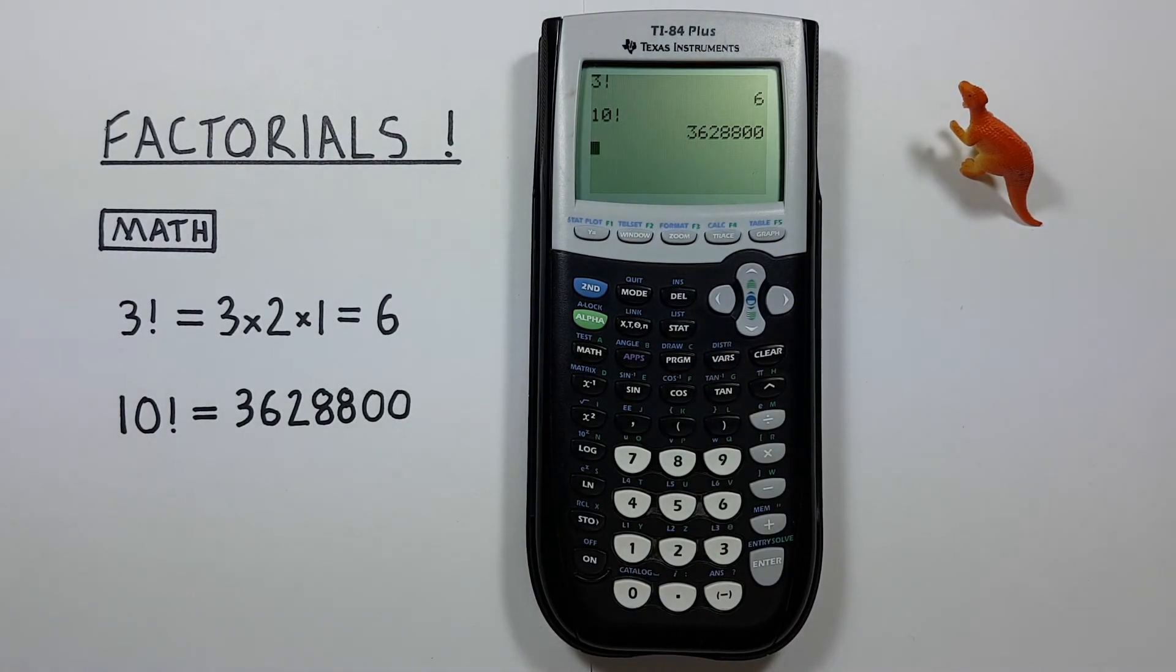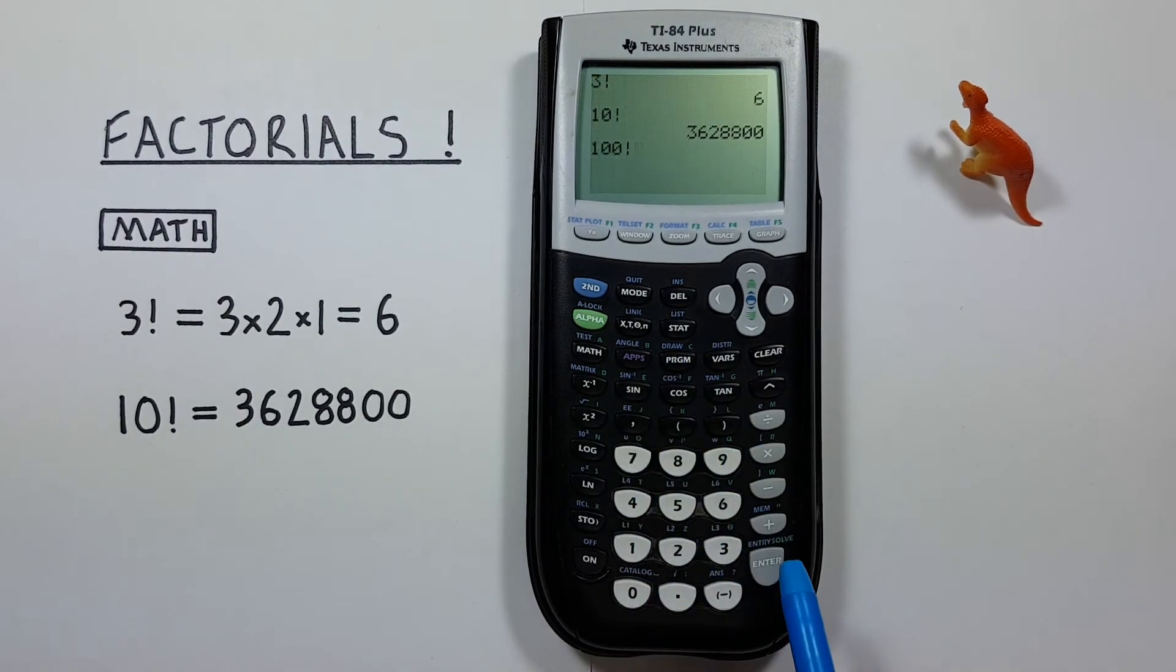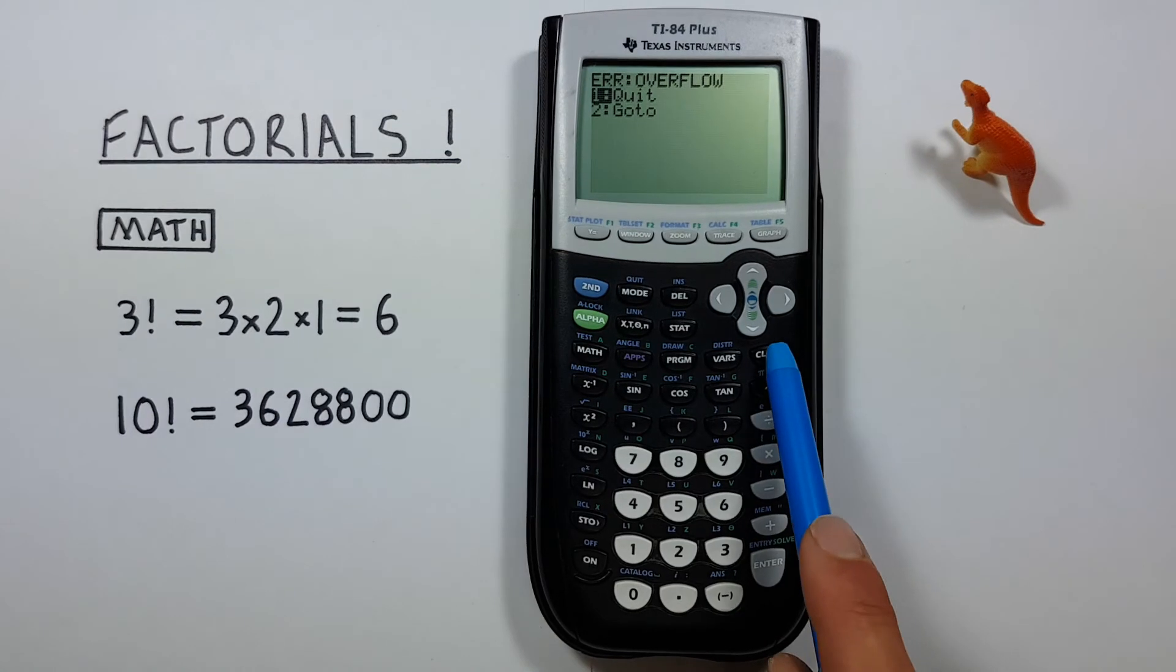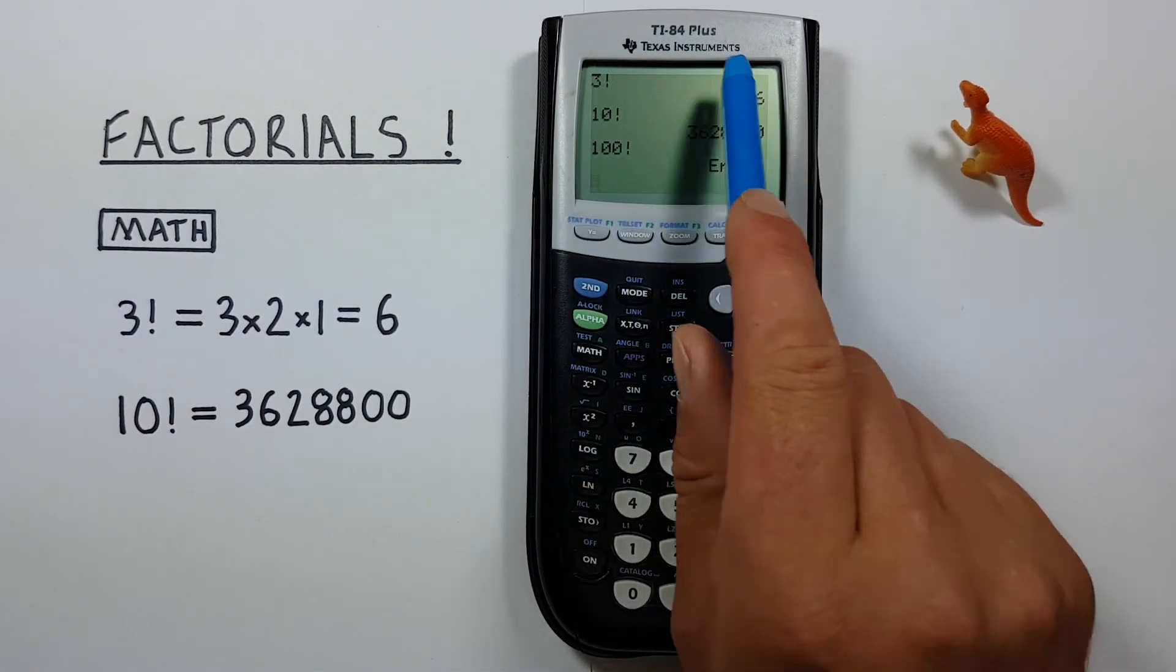One thing to note is that if we try to do a large number factorial like say 100 factorial we'll get an error. That's because the resulting number from this is too large for this calculator to handle.